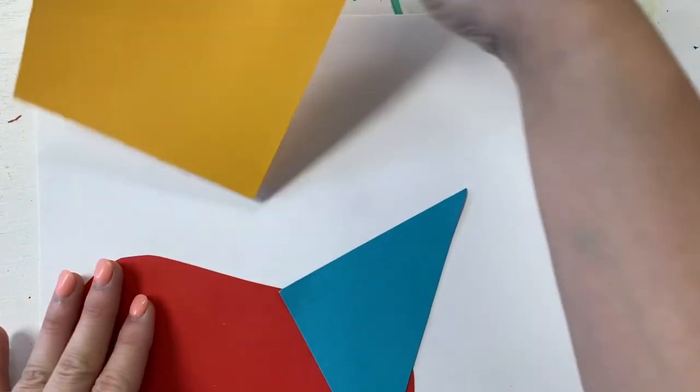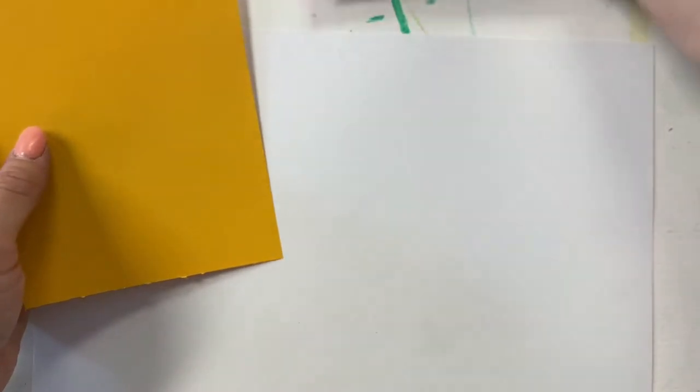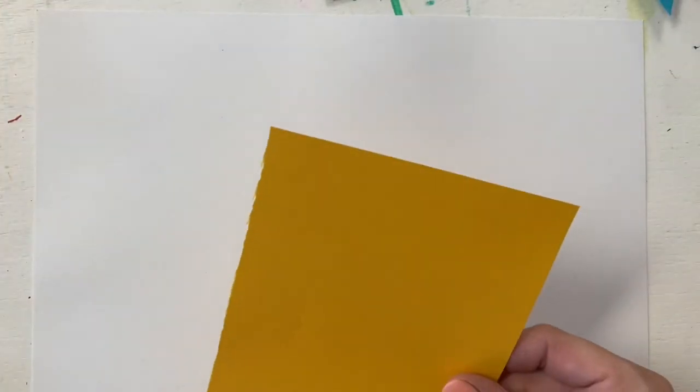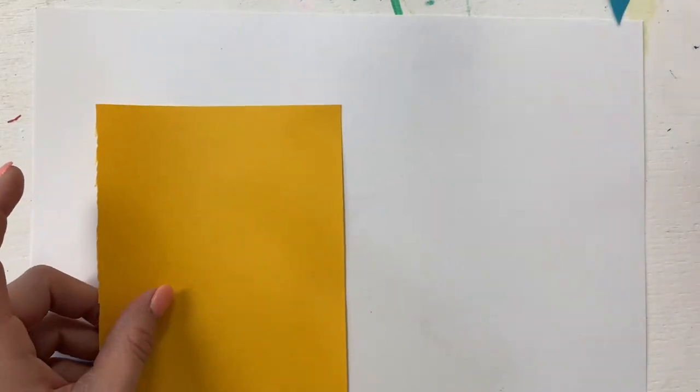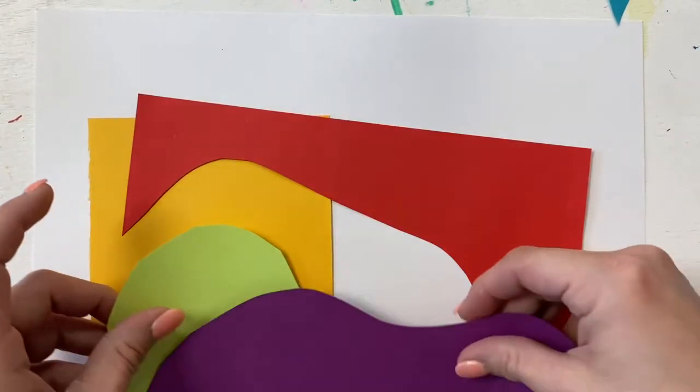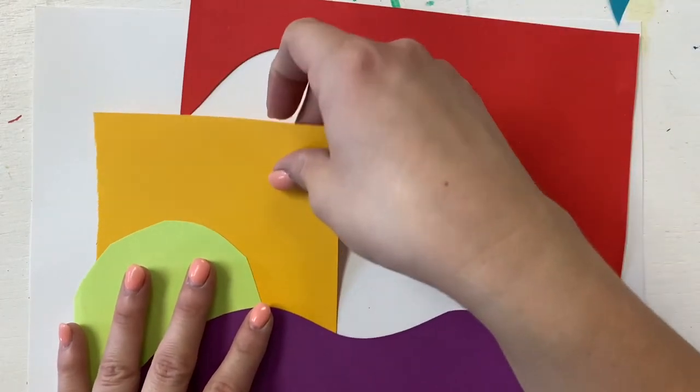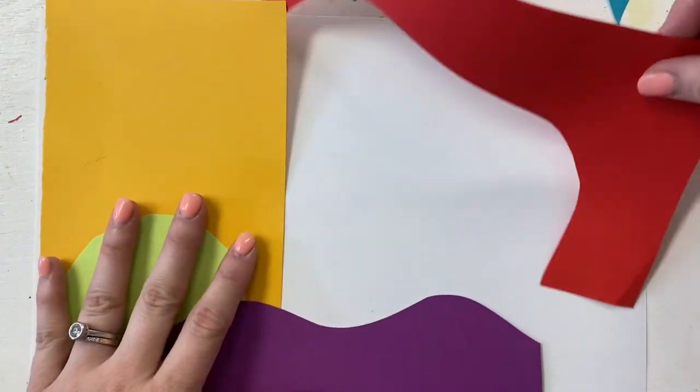So the first thing we're going to do is start with these papers and just glue them on using a glue stick. You can make smaller papers and shapes to put on it if you want to, but I'm going to go ahead and speed up this video so you can see what my background looks like in the end.